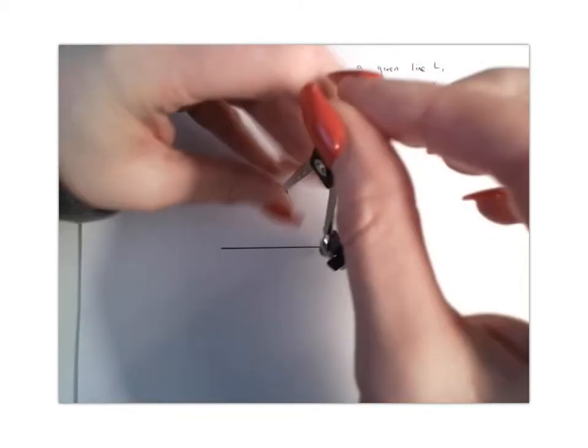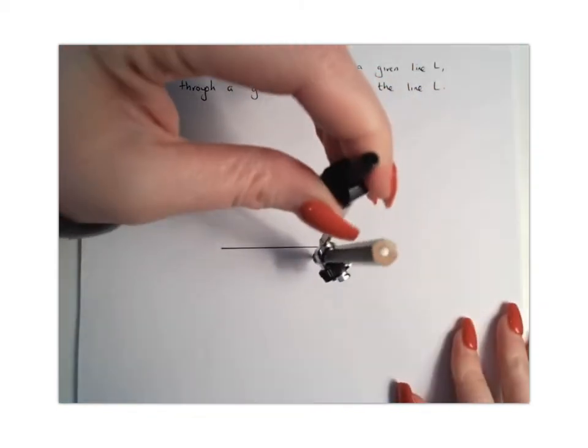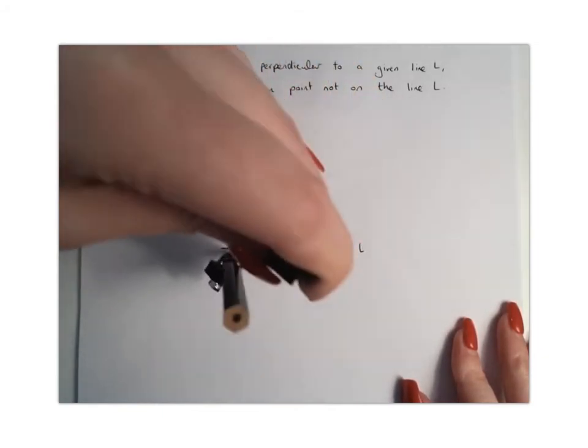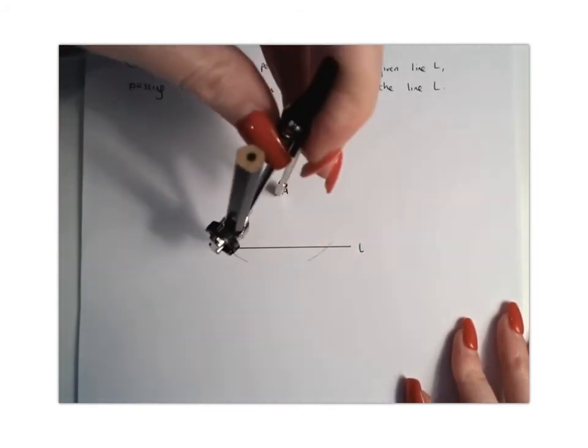So just kind of bring it slightly over your line, and you're going to draw an arc where your compass meets your line L.